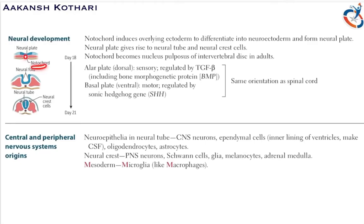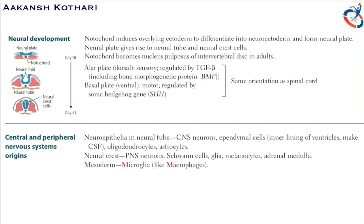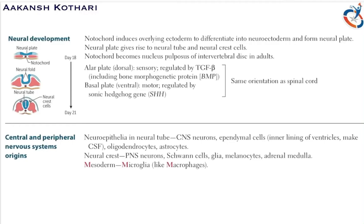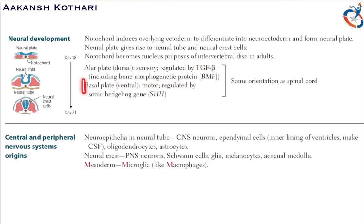The notochord gets converted into the nucleus pulposus of the intervertebral disc in adults. The neural plate has two different aspects: the alar plate and the basal plate. The alar plate is the dorsal neural plate, which is sensory in function, whereas the basal plate is ventral and is motor in function. The alar plate is regulated by TGF-beta and includes bone morphogenic protein (BMP), whereas the basal plate is controlled by SHH — the sonic hedgehog gene.